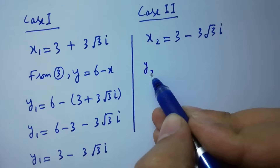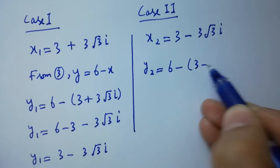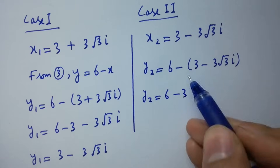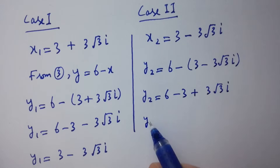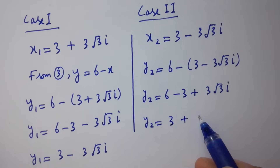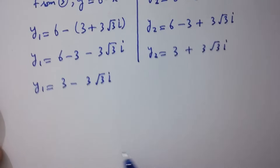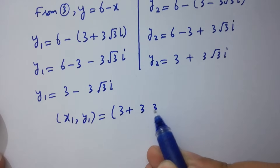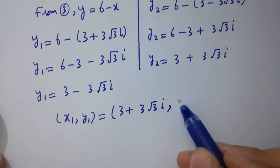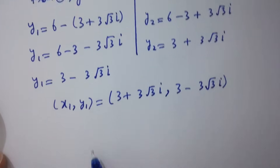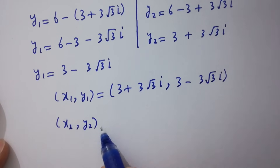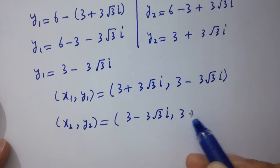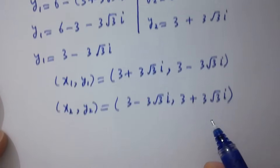For x₂, y₂ equals 6 minus (3 minus 3 times square root of 3 times i), which gives y₂ equals 3 plus 3 times square root of 3 times i. So the solution pairs are: x₁, y₁ equals (3 plus 3√3 i, 3 minus 3√3 i) and x₂, y₂ equals (3 minus 3√3 i, 3 plus 3√3 i).